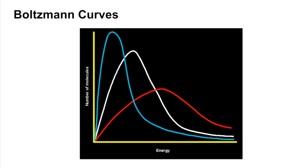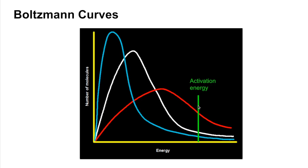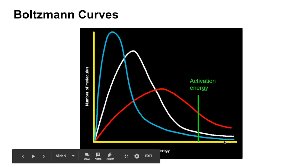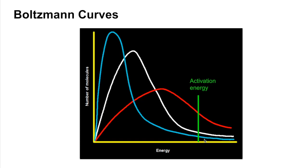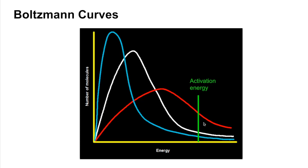Sometimes you have to explain rates of reaction in terms of Boltzmann curves. If we put the activation energy on, the Boltzmann curve shows how many particles have at least the activation energy — that's the area under the curve to the right of the activation energy. At the lower temperature, the area under the curve is quite small, so there aren't many particles with at least the activation energy. At the medium temperature, you've got a slightly bigger area, whereas at the high temperature you've got a much bigger area — so more particles have at least the activation energy, giving more successful collisions per second.